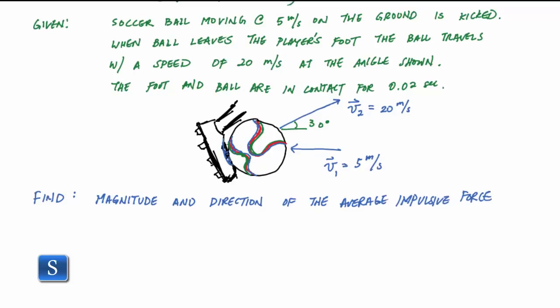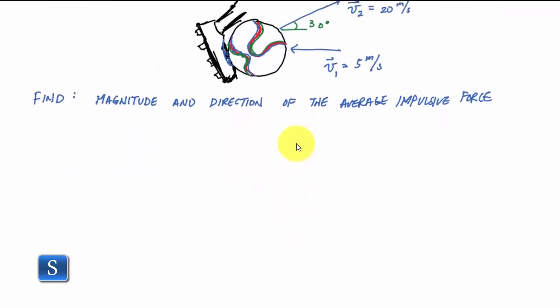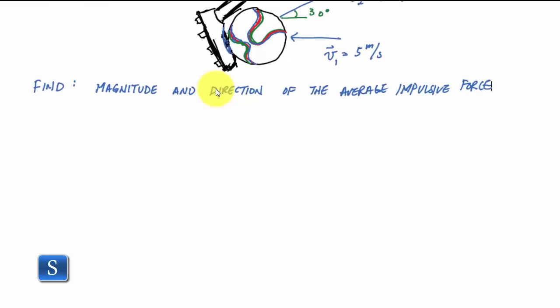All right, so now before we apply the principle of linear impulse and momentum, let's just make sure that we're all on the same page here. I'm going to write out this principle real fast. The idea in most textbooks is that the momentum at one plus the sum of all the impulses, which is this integral of F dt, is equal to the momentum at two.